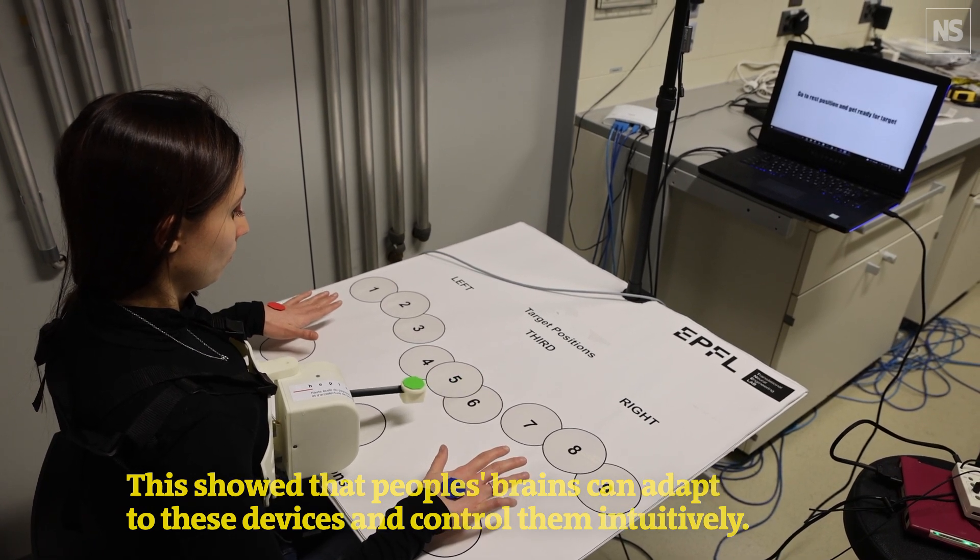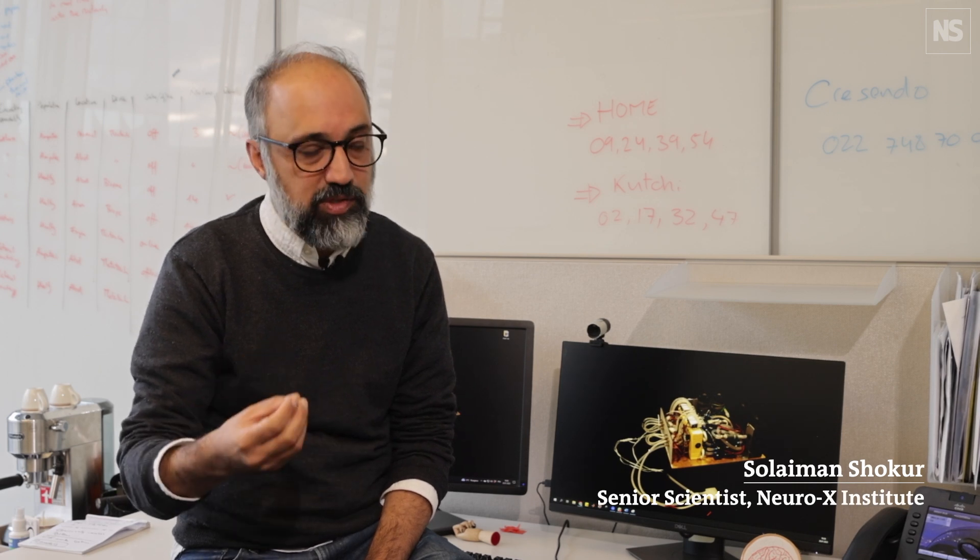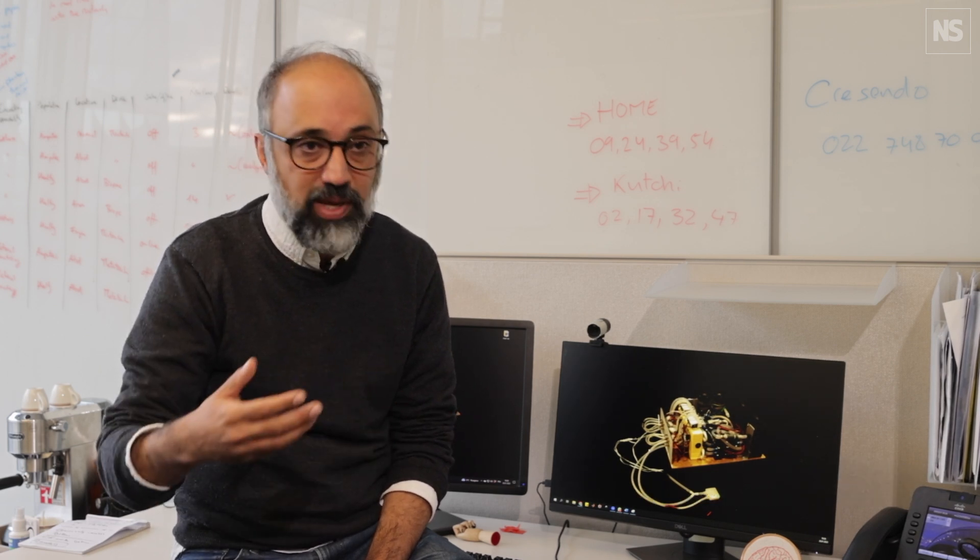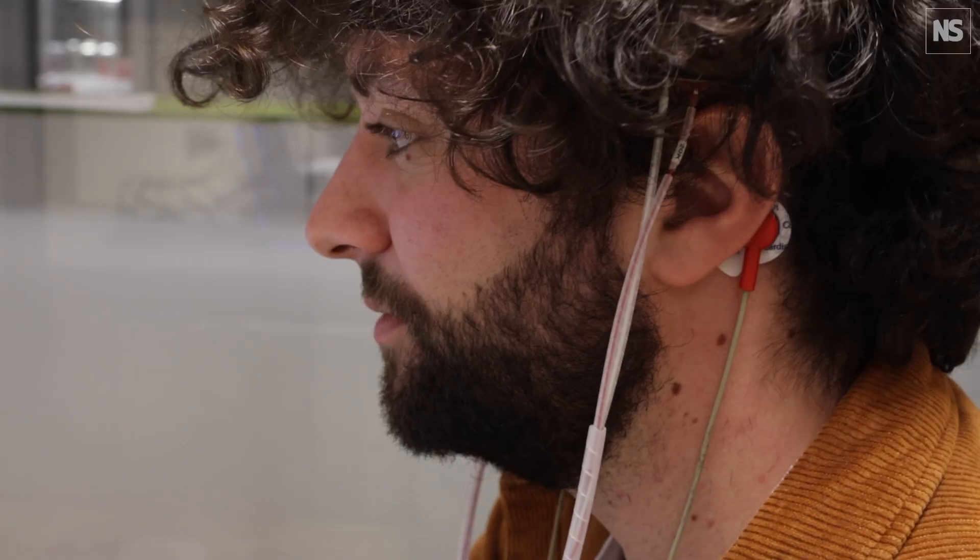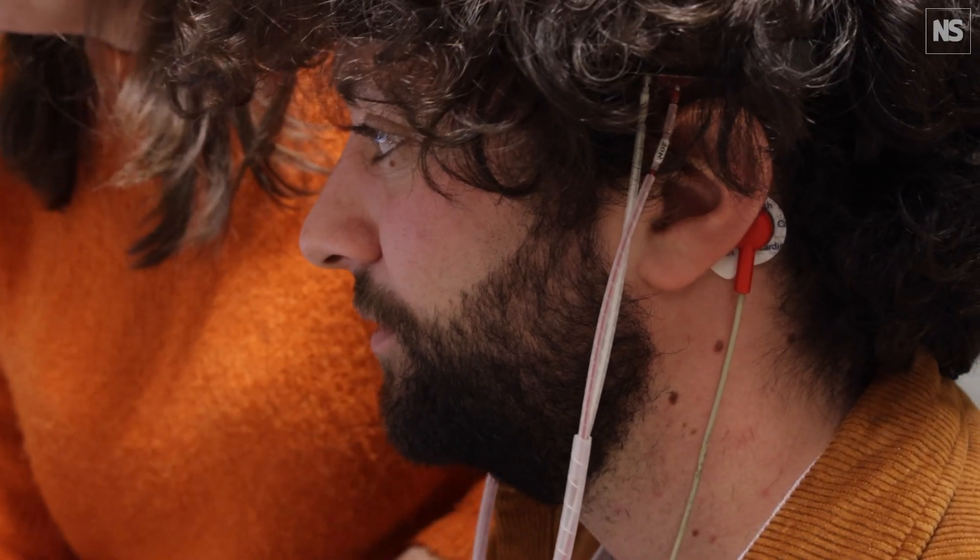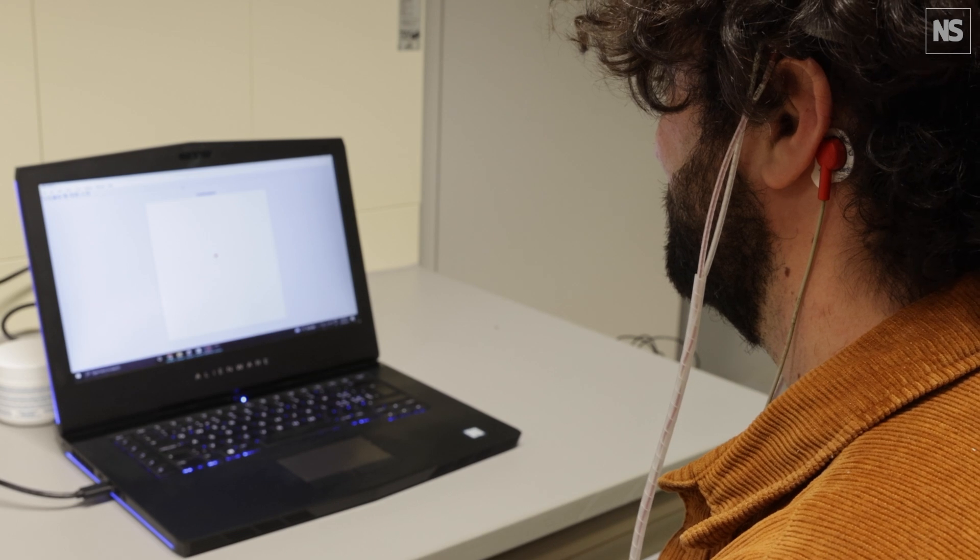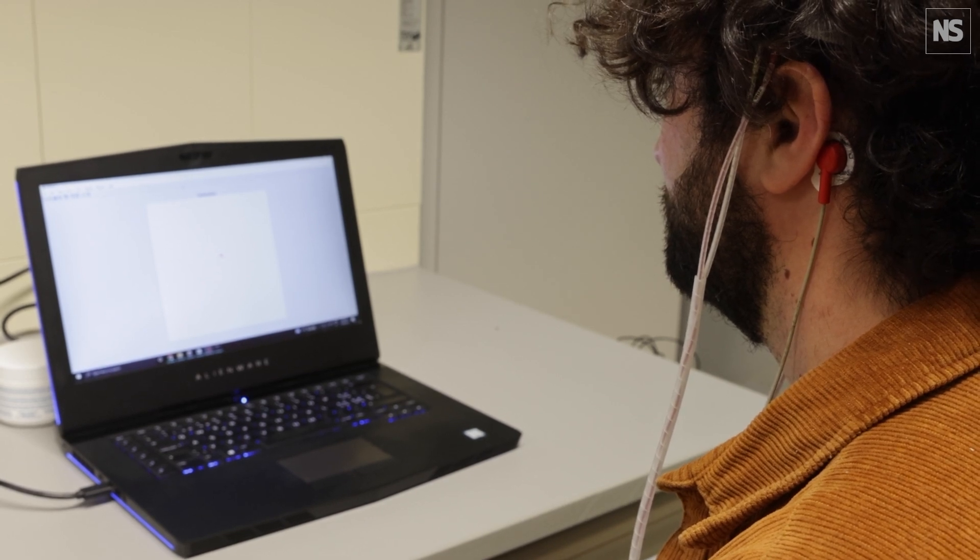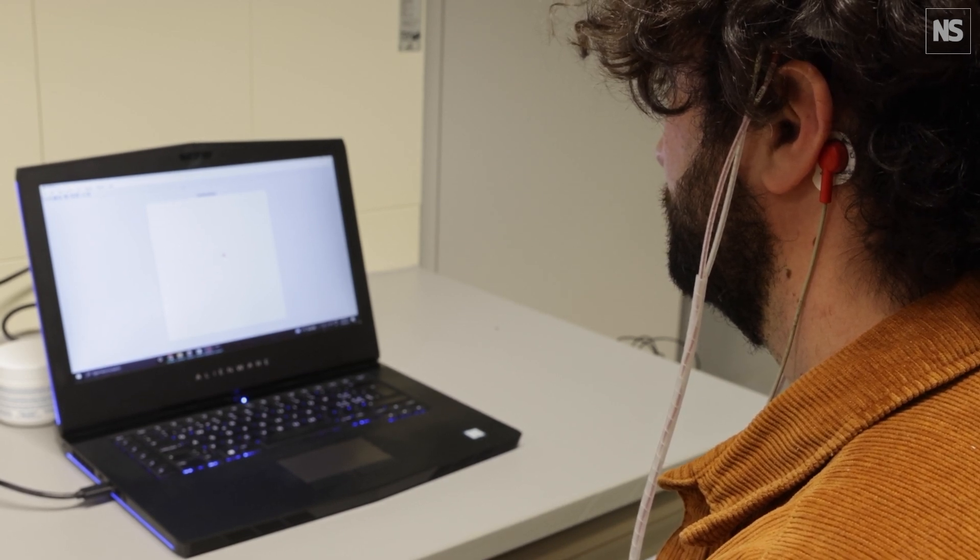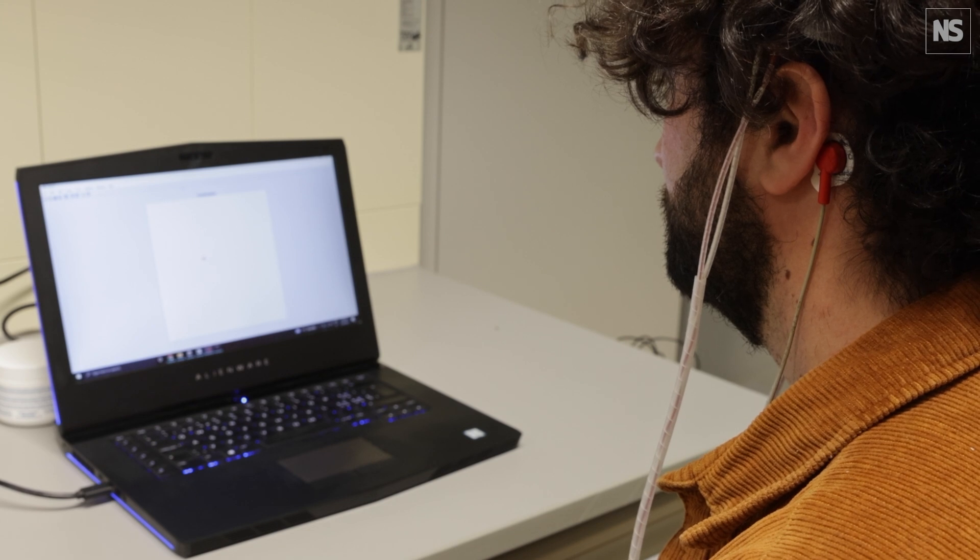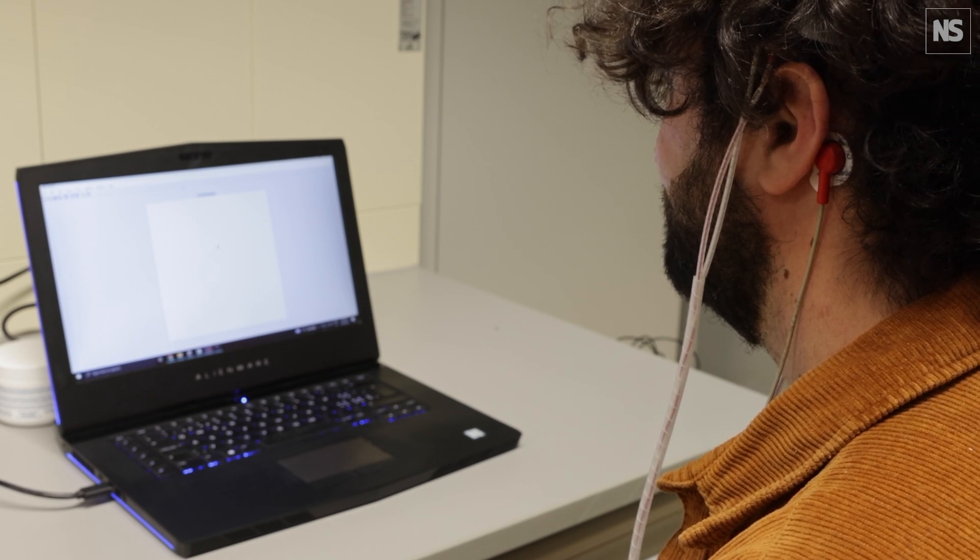We're also investigating other approaches to control this extra limb, for example using vestigial muscles - muscles in our body that have lost their functionality through evolution. We found that through a few days of training, people could use these auricular muscles behind the ears to control this extra limb while still using their natural arms and speaking and looking around.